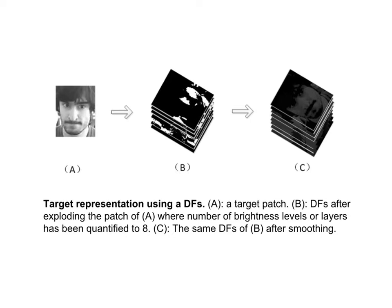Furthermore, it will blur the image, destroy image information, and cause target loss. Especially, in order to avoid destroying image spatial information by common blur techniques, Sevir and Learned-Miller used distribution fields to build an image descriptor able to smooth the objective function and keep the information about pixel values.